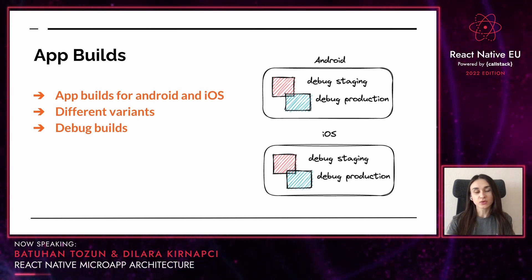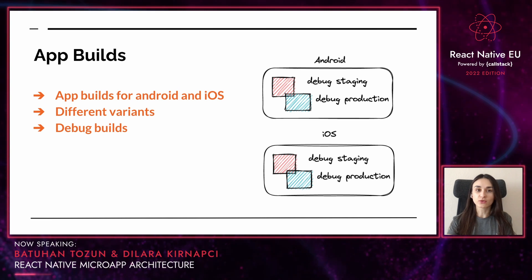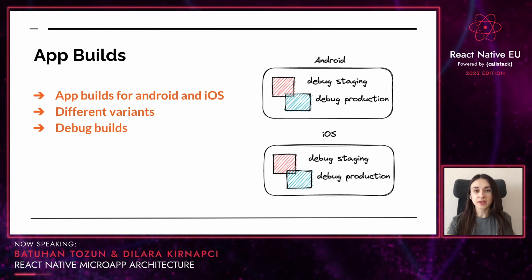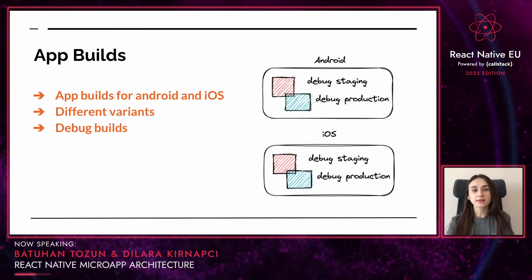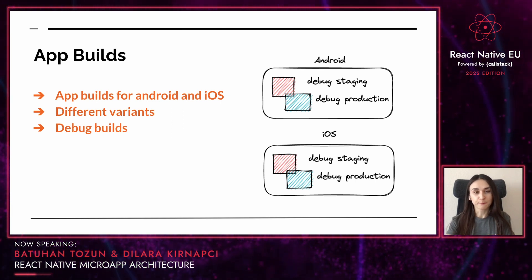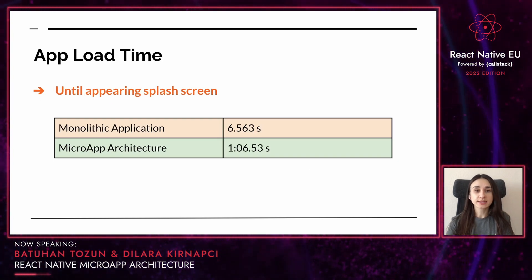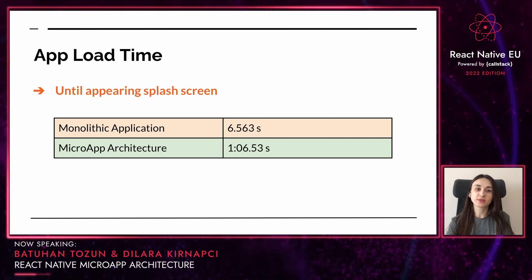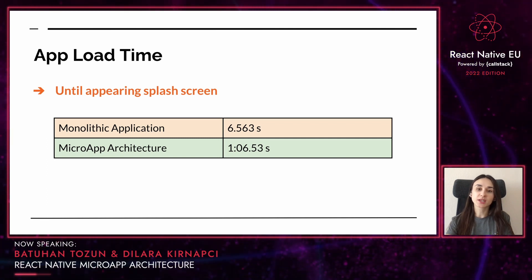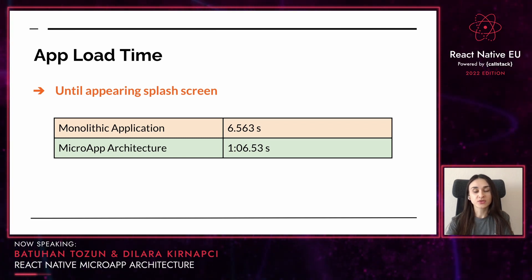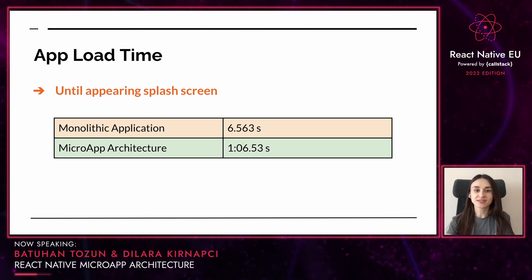The other important thing about the core app is app pre-builds for Android and iOS. It can hold different variants of pre-builds and they are published with the core app as an npm package. The microapps use these debug applications and the app runs quickly with other microapp developments. Keeping debug builds in the core app provides a significant improvement in application load time. When we measured the running iOS script, the monolithic application load time takes more than a minute. But for microapp architecture, the load time takes less than 10 seconds, which makes the development environment much easier.